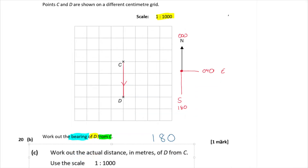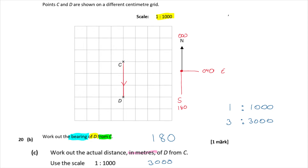Part C: Work out the actual distance in metres of D from C. Counting from C to D on the grid gives 3 centimetres. With a scale of 1 to 1000, that is 3 × 1000 = 3000 centimetres in reality. Converting to metres by dividing by 100: 3000 ÷ 100 = 30 metres.